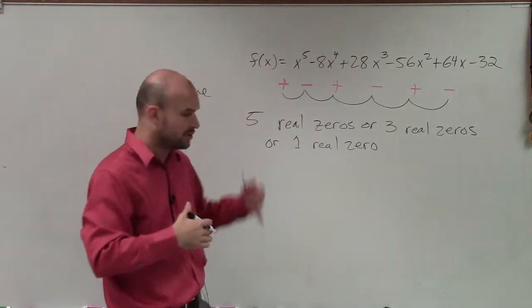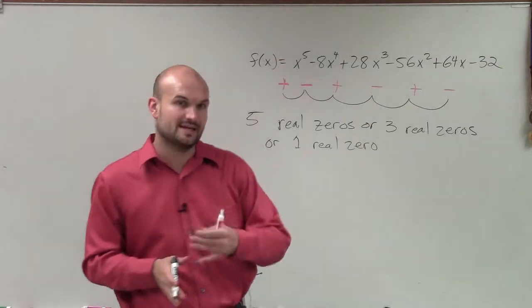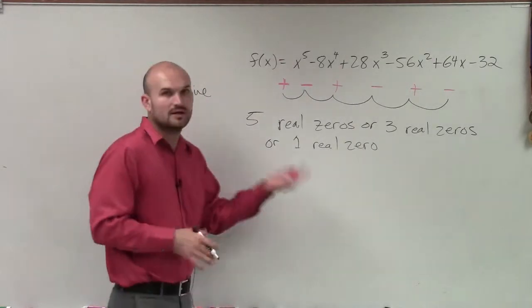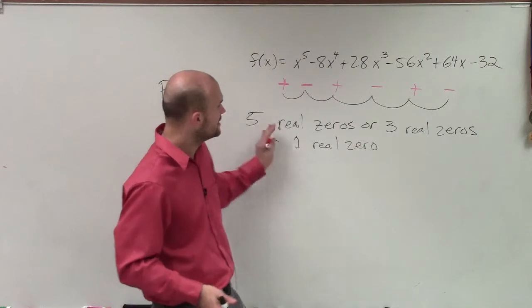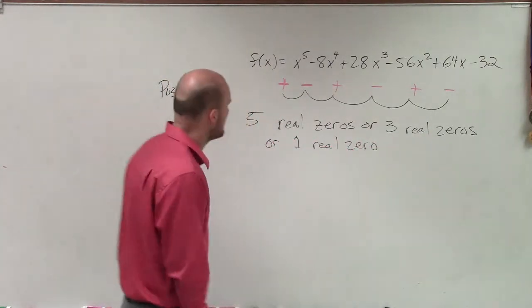So you always have to include the total number of times you alternate, and then keep on subtracting an even number. And the easiest even number, remember, is 2. And just keep on subtracting it so you can get all the possibility of positive real zeros.